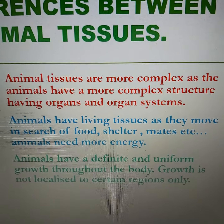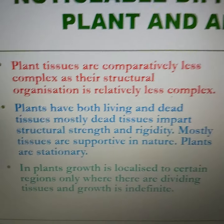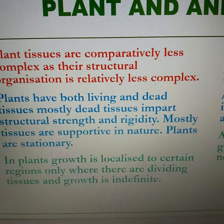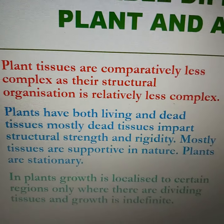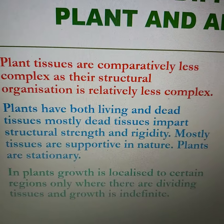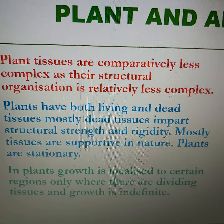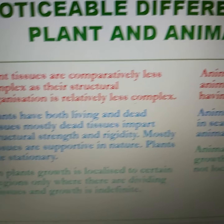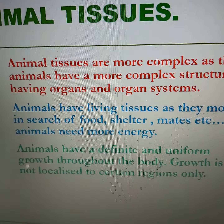The third important point is that in plants, growth does not take place everywhere in the plant body — it is localized to certain specific regions only. This growth takes place in an indefinite manner throughout the lifetime in those regions. On the contrary, animals have a definite and uniform pattern of growth — it takes place uniformly throughout the body for a certain time period. These are the striking differences between plant tissues and animal tissues, which is a very important exam question.